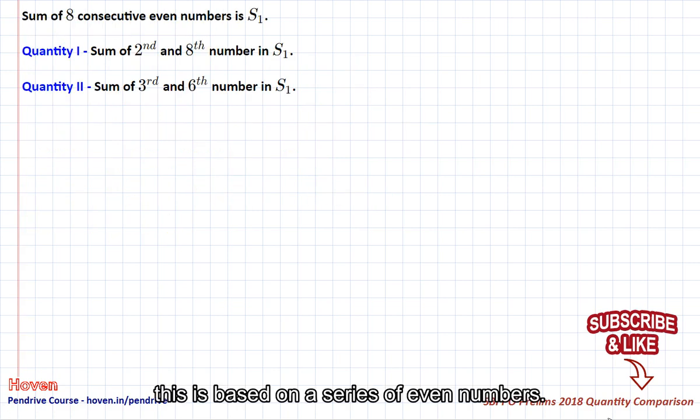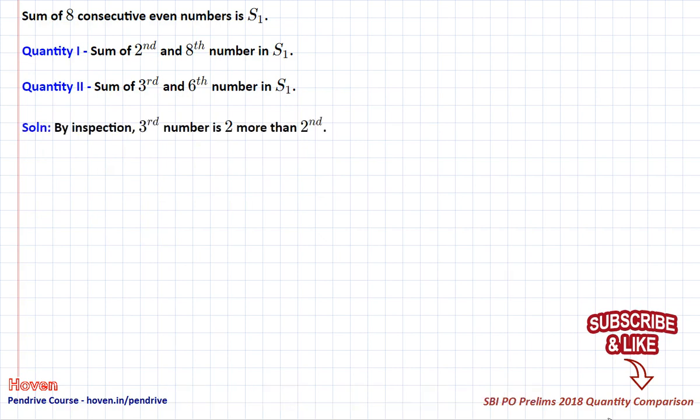This is based on a series of even numbers. The series is of even numbers, so the third number is 2 more than second. Hence quantity 2 has a lead of 2.